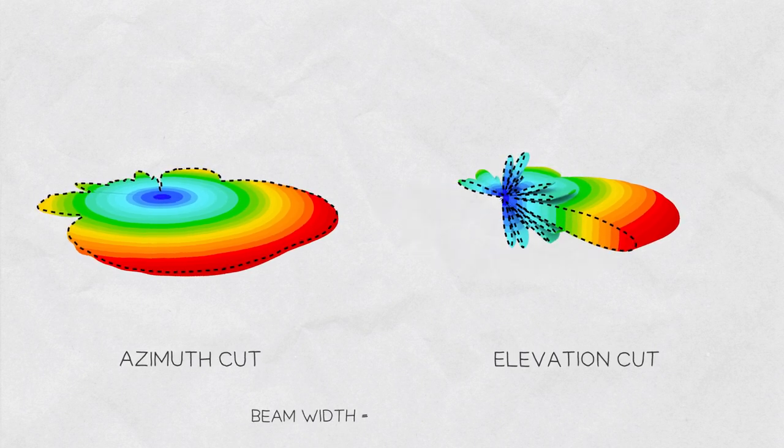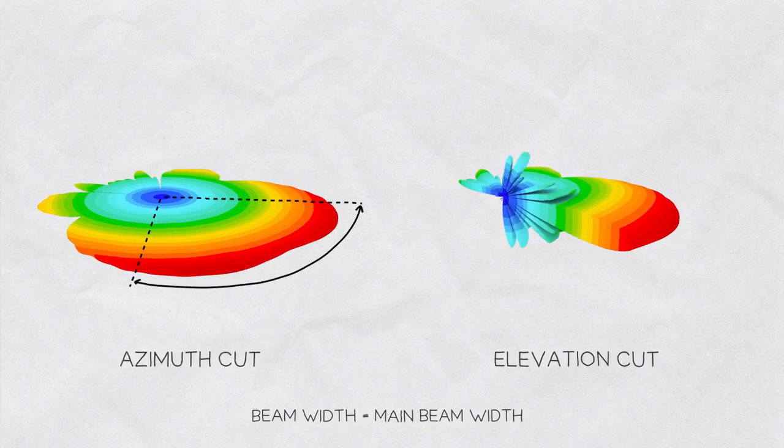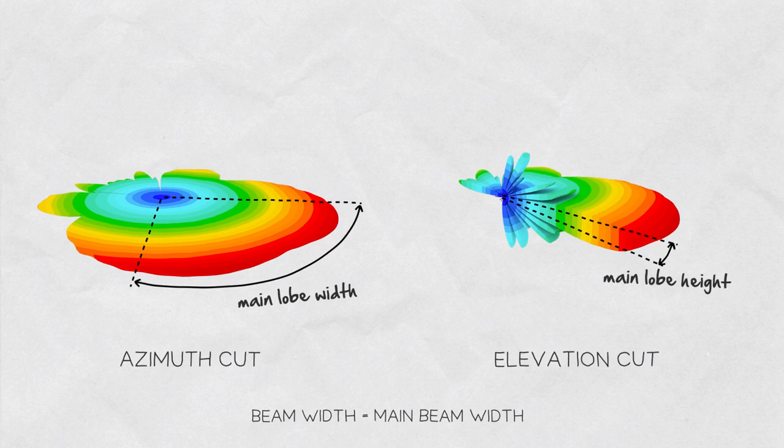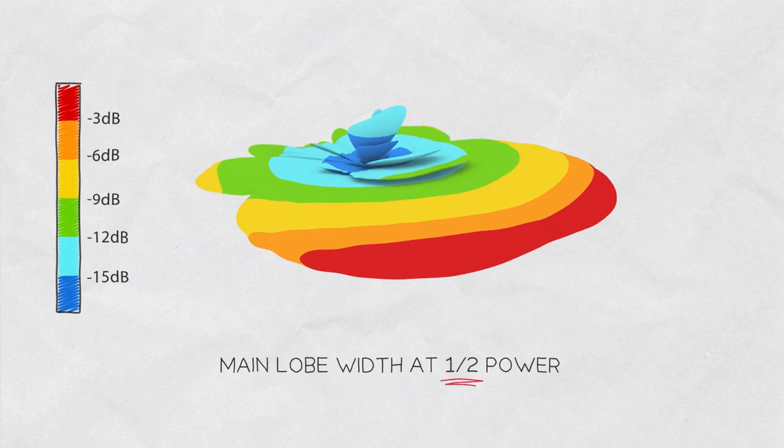When we speak about antenna beam widths we're exclusively speaking about the width of the main beam, also called the main lobe. An antenna beam width is the angular width of the main lobe measured in its azimuth and elevation cuts. The most common approach is to measure the width of the main lobe till its power is half of the highest power the antenna can radiate at its boresight.